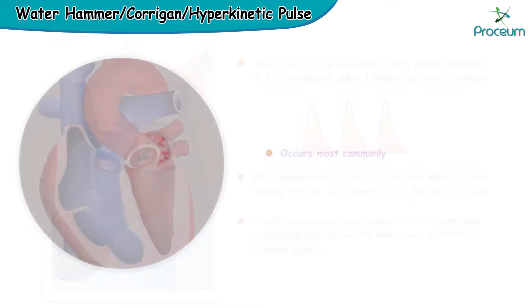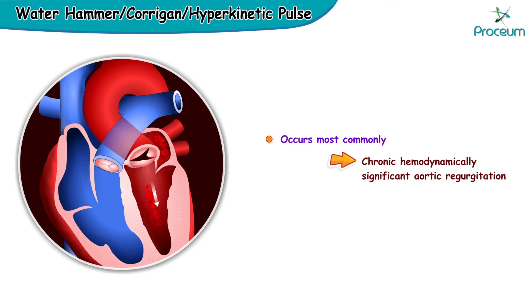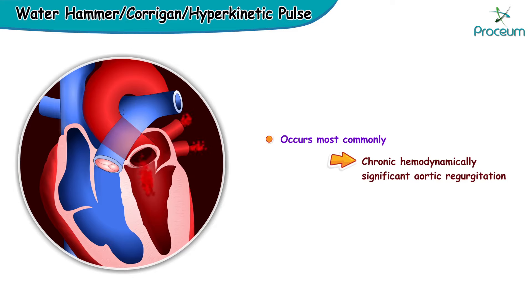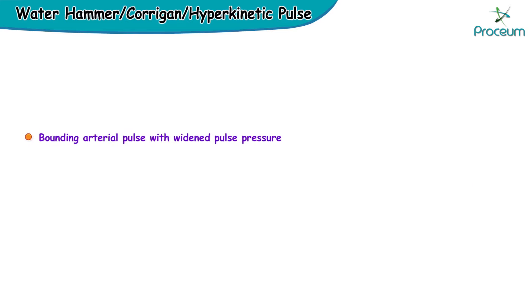Thus it occurs most commonly in chronic hemodynamically significant aortic regurgitation. However, a bounding arterial pulse with widened pulse pressure is not diagnostic of aortic regurgitation alone.